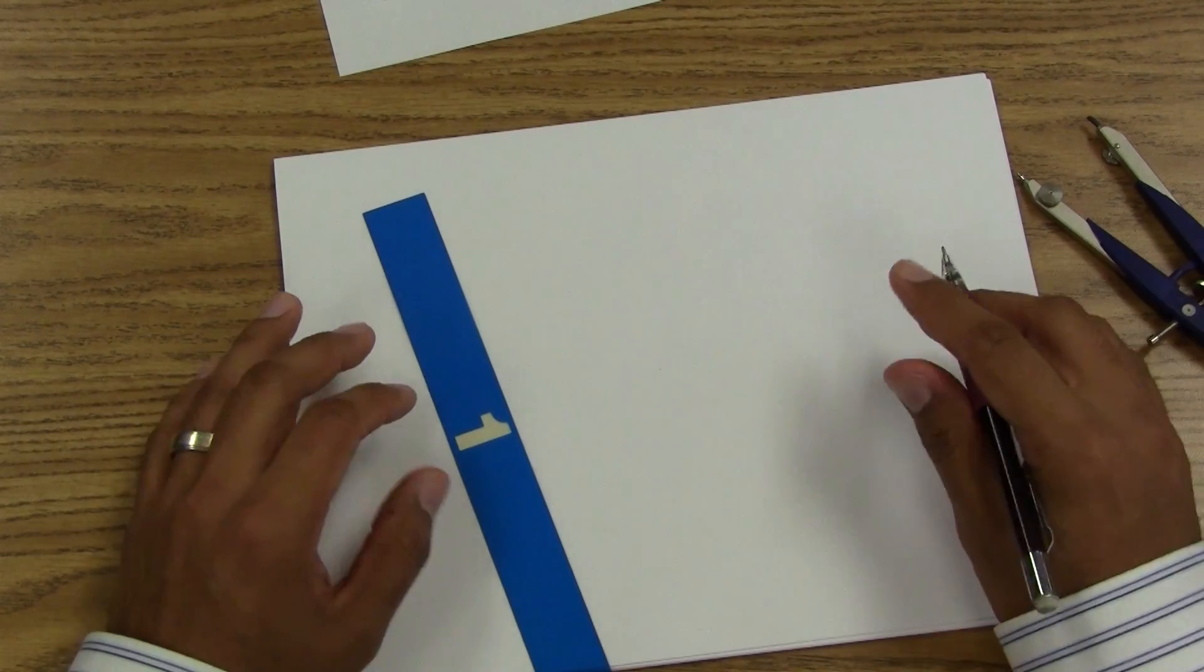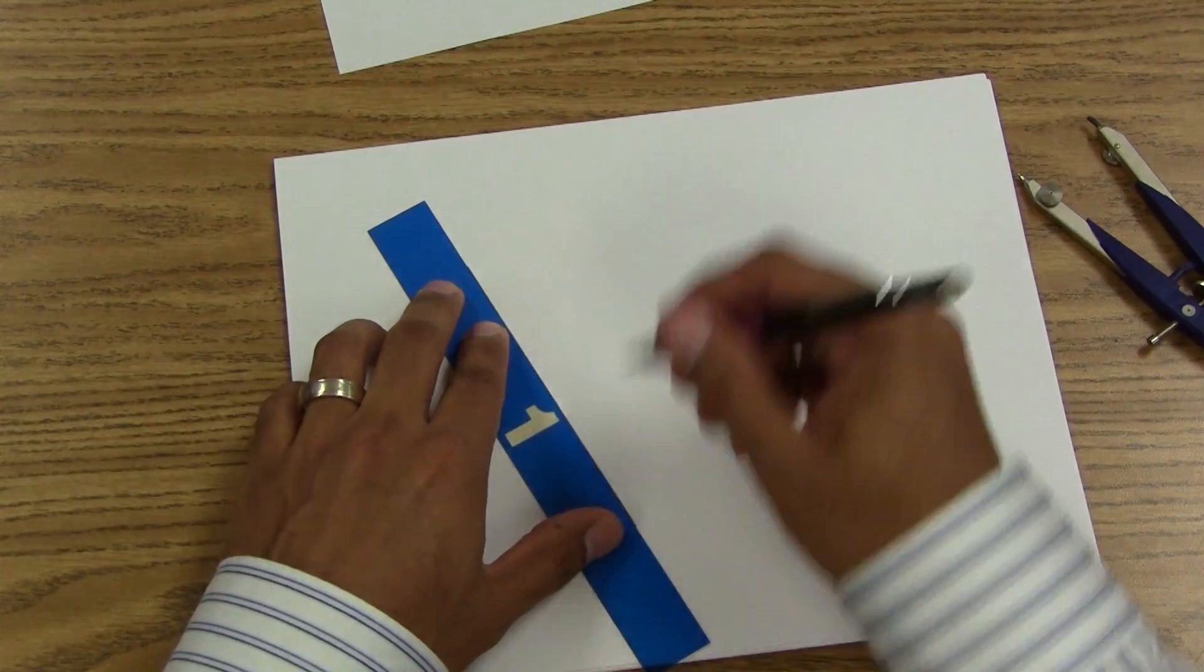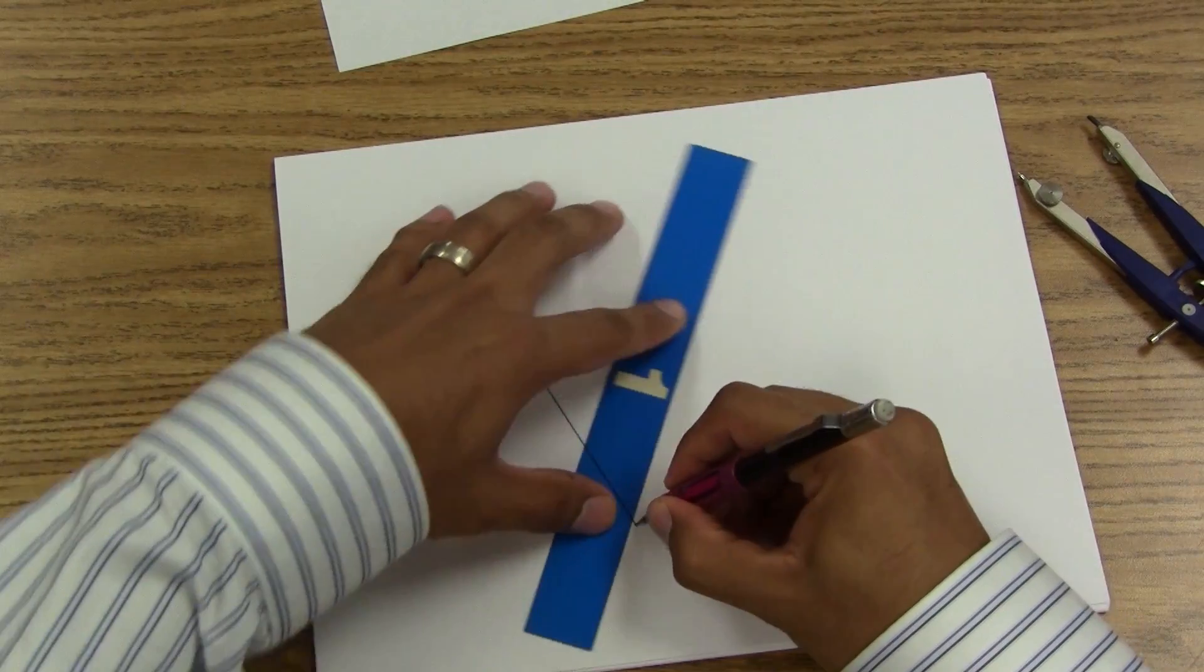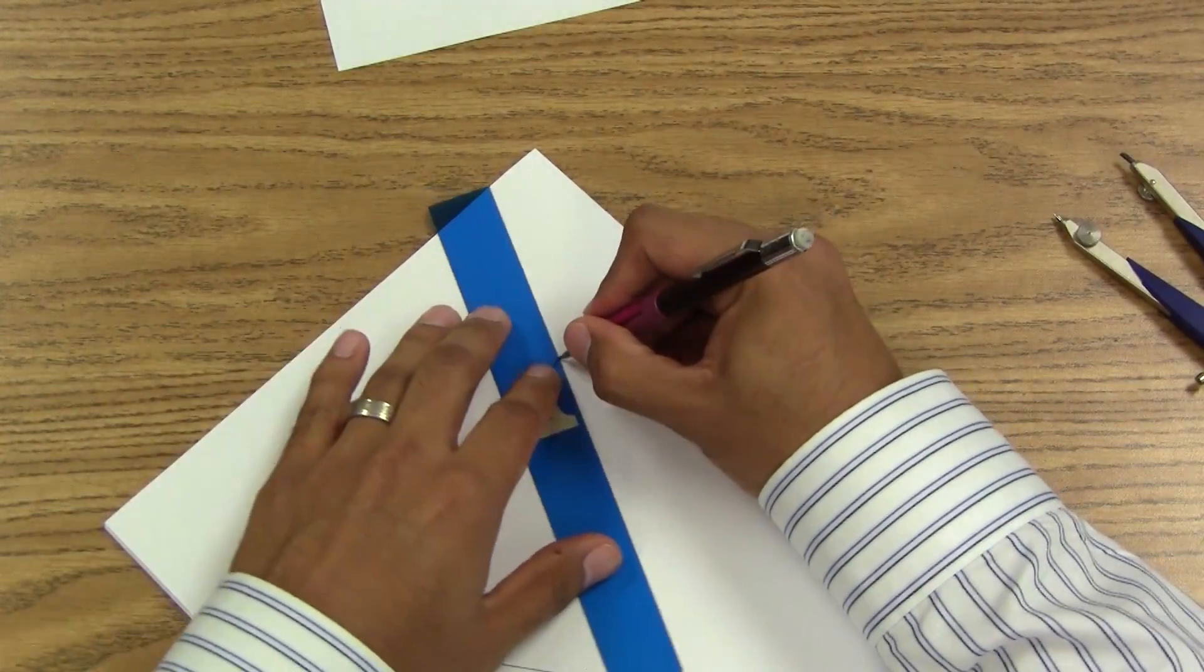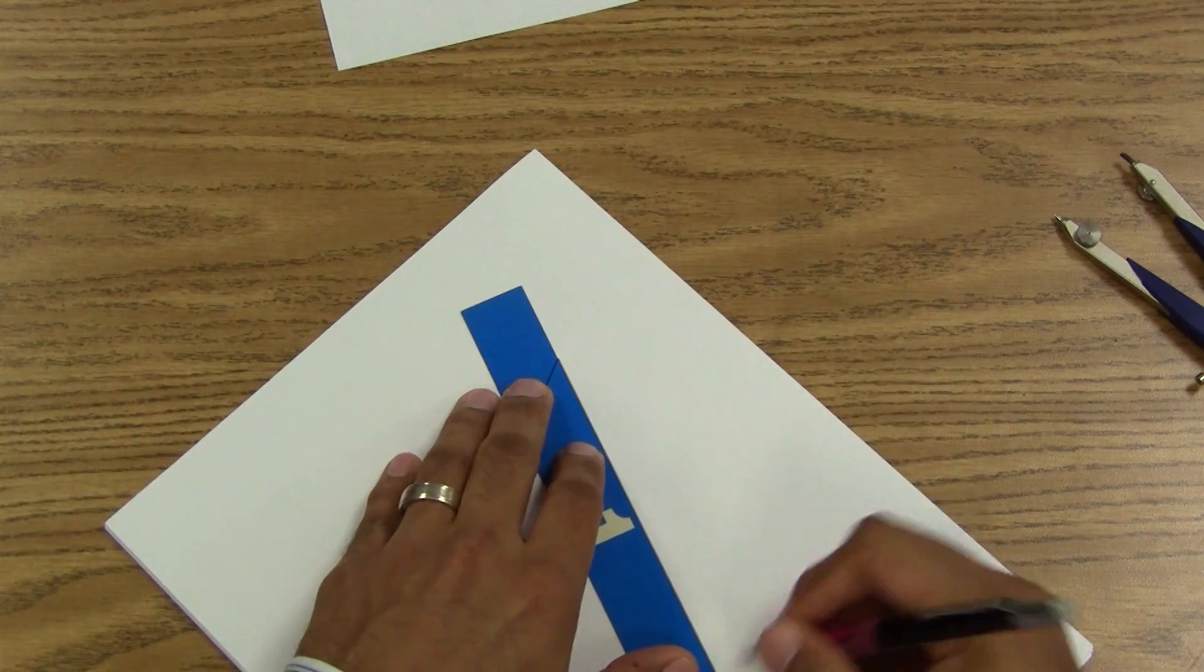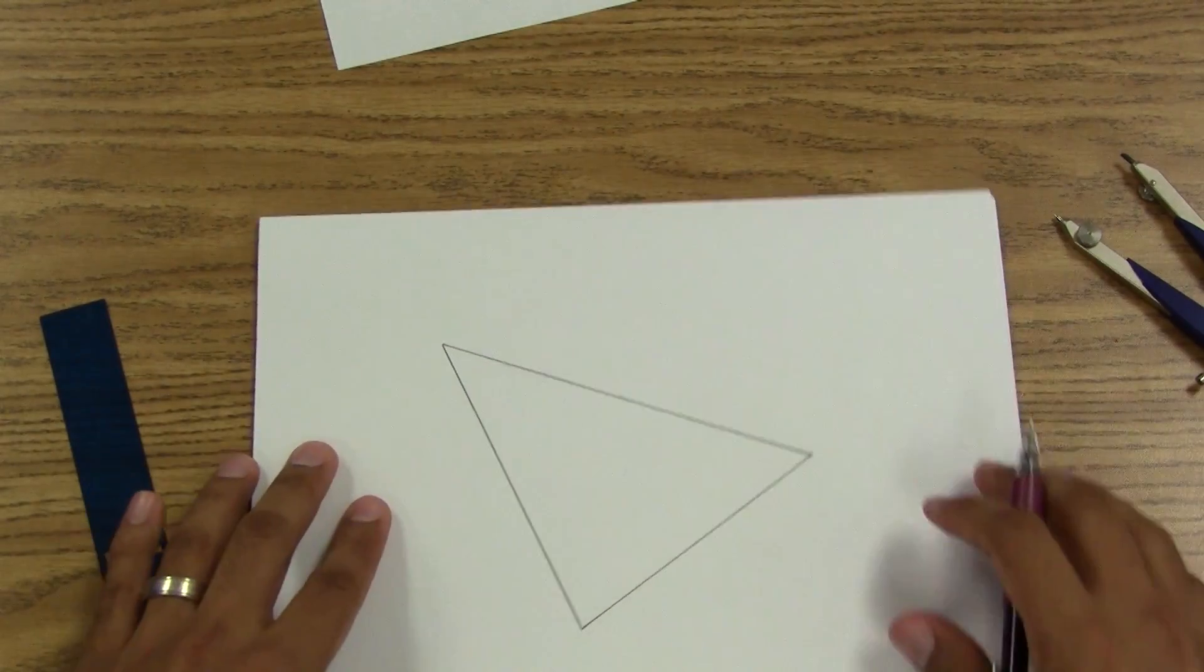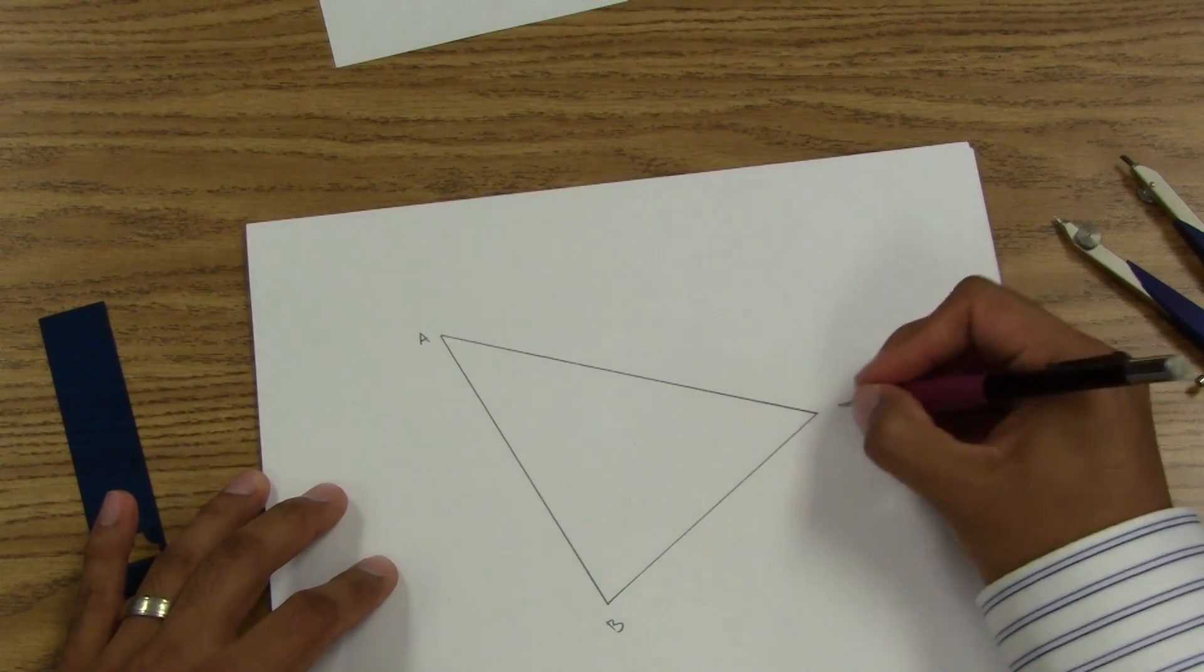We still have another case. Let's go ahead and make another random triangle. Why don't we make three perpendicular bisectors. Once again I'll make this A, B, C.